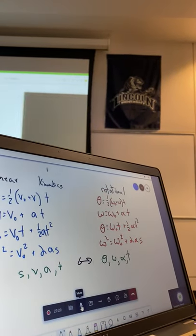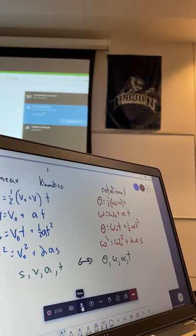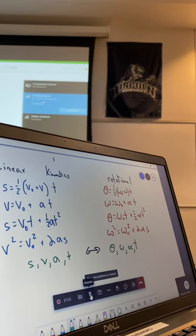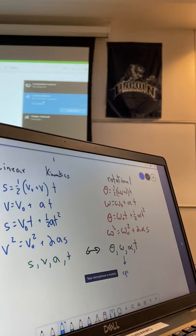Student asks: Is omega always going to be in radians per second? Instructor: Omega, yes. Typically with omega, you're given RPMs, but you cannot use the equations with RPMs. So you need to go to radians per second.